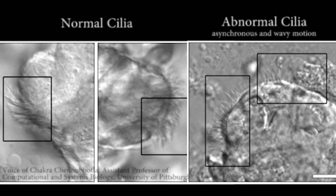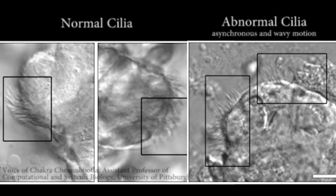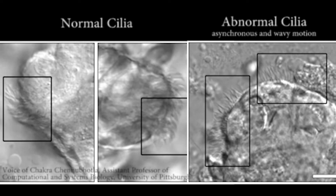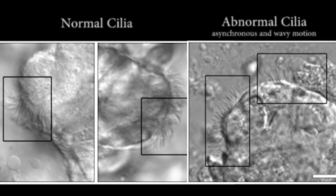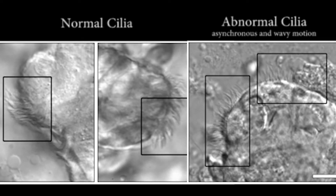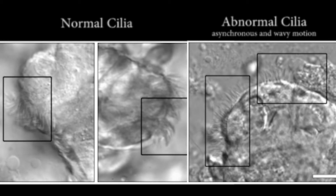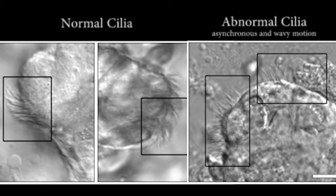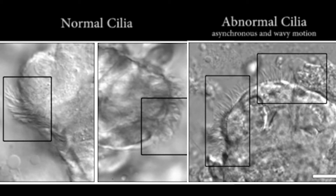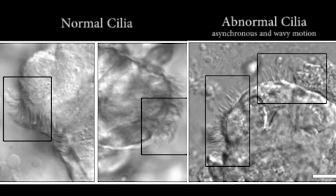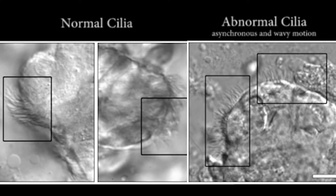What we did was that we computed a very basic measurement called the optical flow, and from the optical flow we could compute some very basic properties such as rotation and deformation. Then we used them to tell what is a normal ciliary motion from an abnormal ciliary motion.